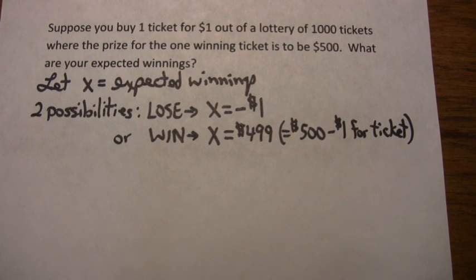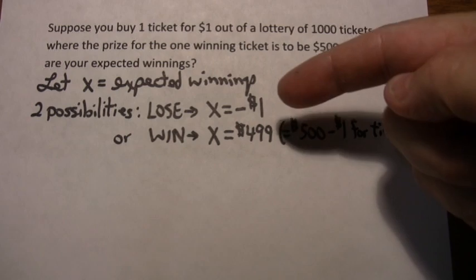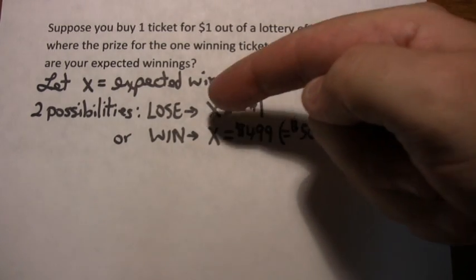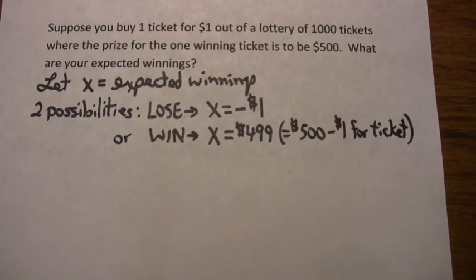If you lose, what have you lost? All you lost is the dollar you spent to buy the ticket. So your loss would be negative $1 or your expected winnings would be negative $1, negative indicating that it's a loss.